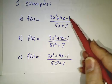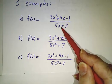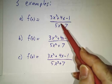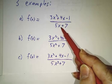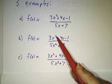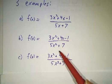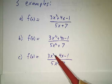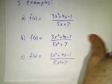One example has more powers of x upstairs than downstairs — it's got an x squared upstairs, it's only got one power of x downstairs. One example has the same number of powers upstairs and downstairs. And one example has fewer powers of x upstairs than downstairs. So let's tackle them one at a time.